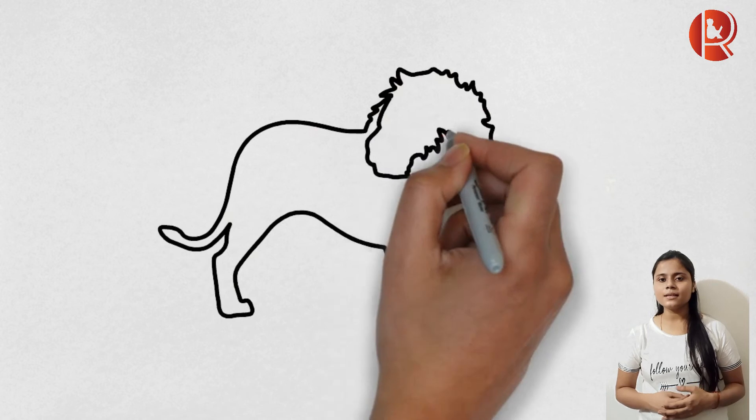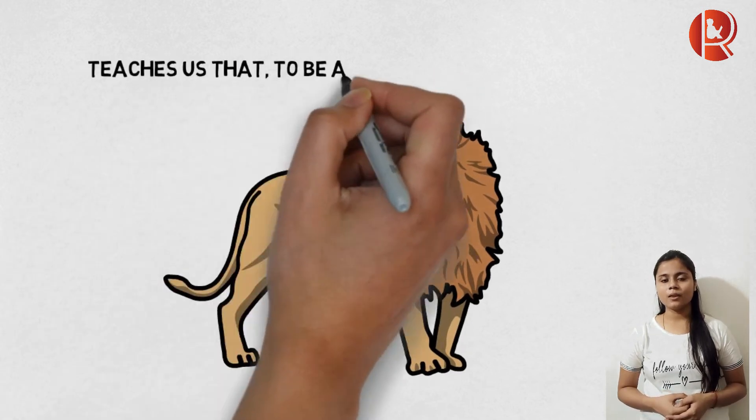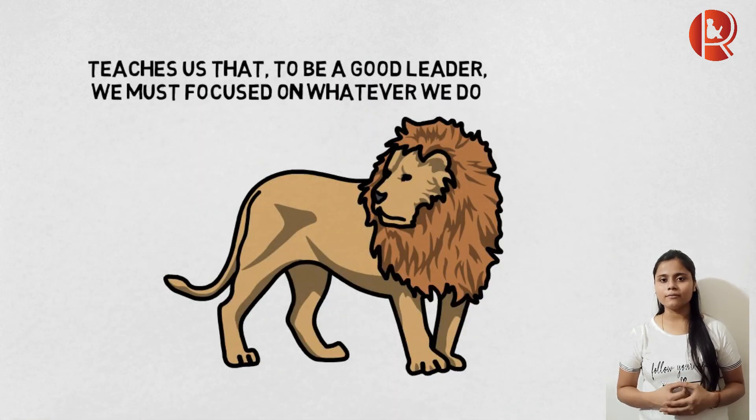Even the animals have a lot to teach us. The lion is the king of jungle and does everything with strength and focus intensity. To be a good leader, you must be focused on whatever you do.